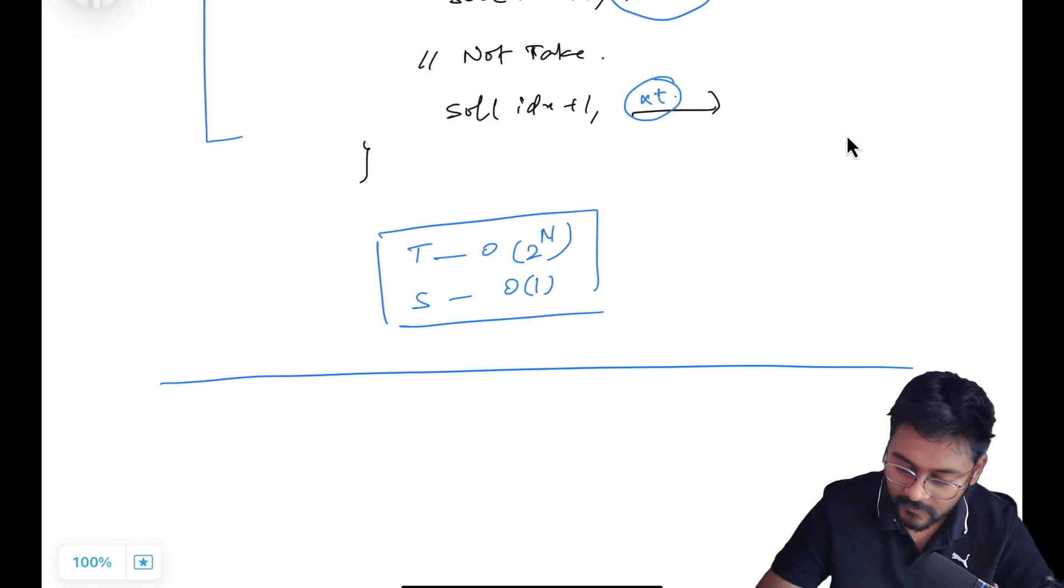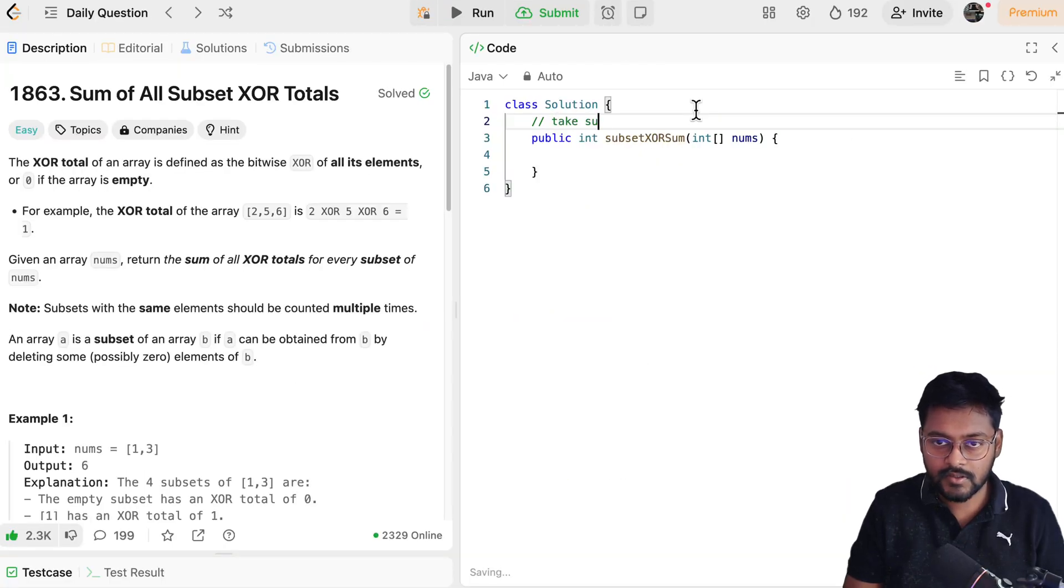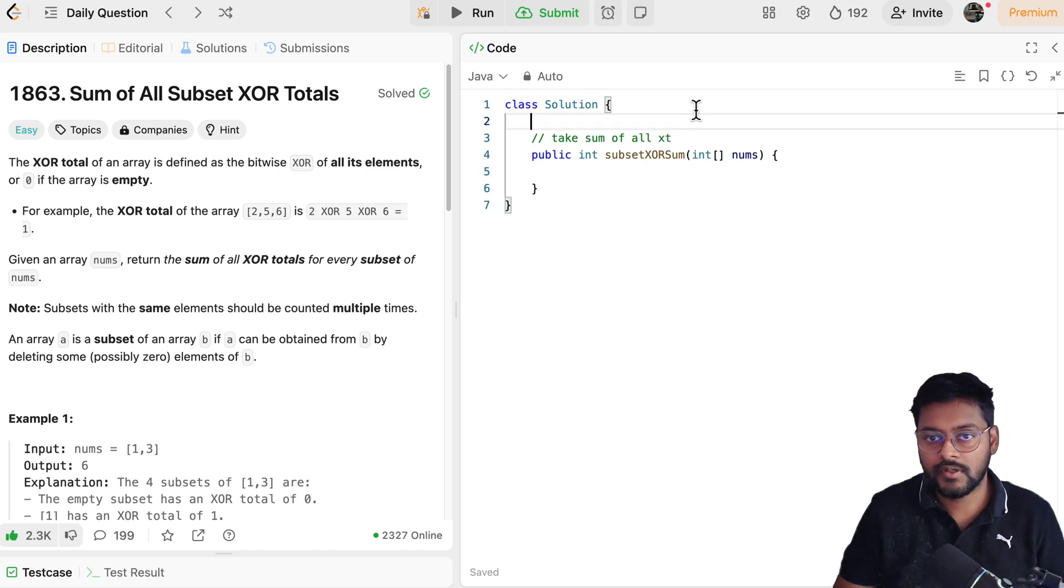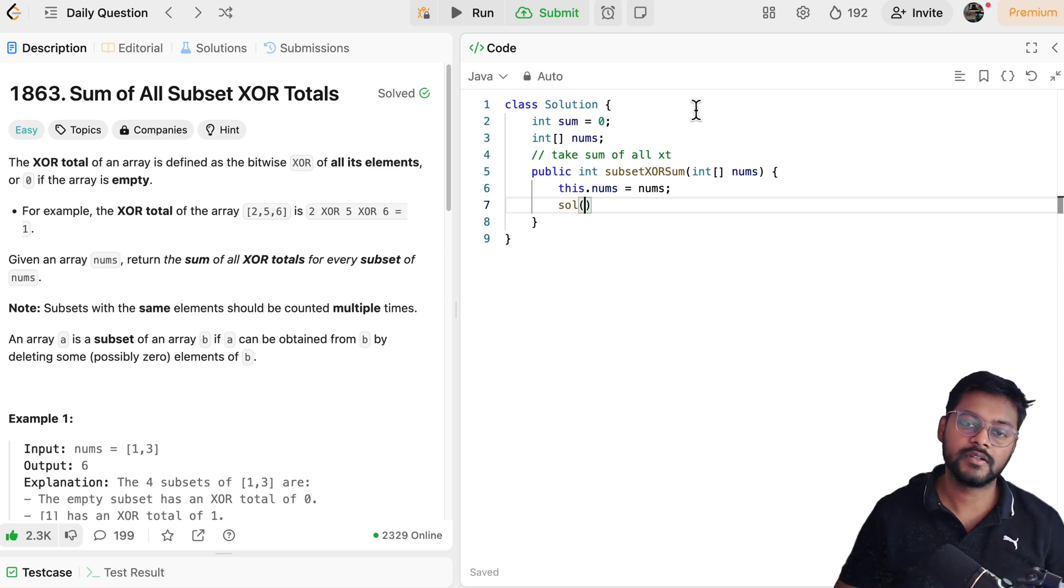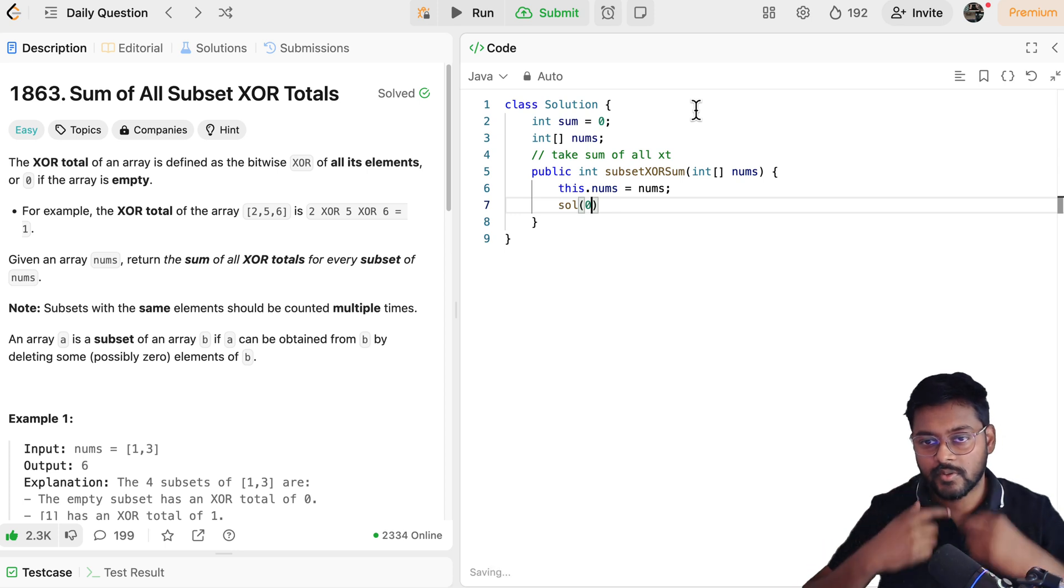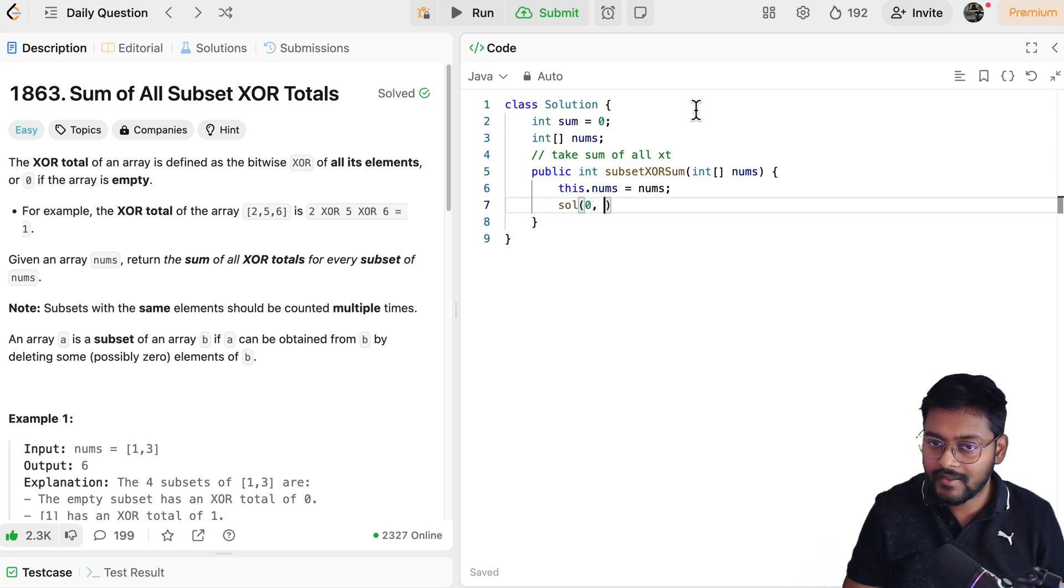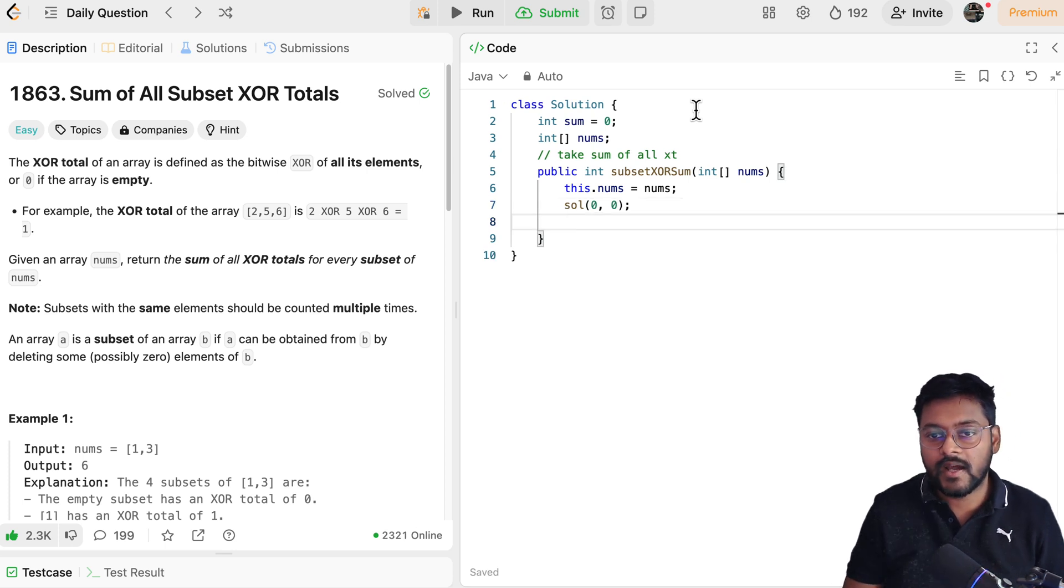Now let's code this approach. So here what we have to do: take sum of all XOR totals. Let's say that sum is going to be captured in this sum variable. And let me also take this nums globally, so that I don't have to pass it to my solution function. This.nums equals nums. And now I am going to write a helper function which will be taking what value? Starting from index 0, just start the processing from index 0, and currently the XOR total value is 0, initialize with identity. After that, I will be capturing all the values in this sum, and this sum I can return.